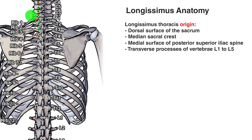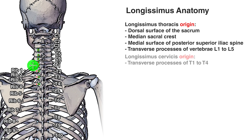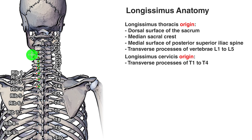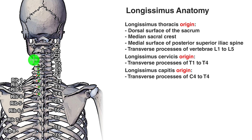Moving up to the origins of the cervicis section, marked with white outlines, it's on the transverse processes of T1, T2, T3, and T4. As for the capitis section, marked with green outlines, it's again on the transverse processes, at C4, C5, C6, C7, T1, T2, T3, and T4.